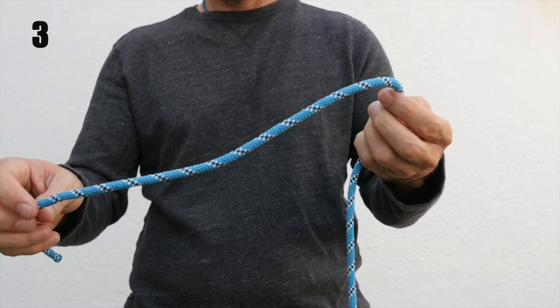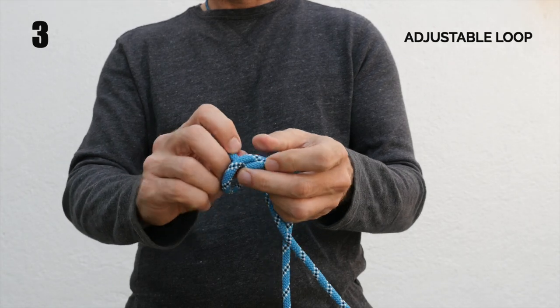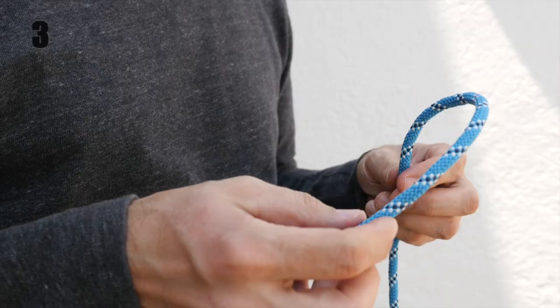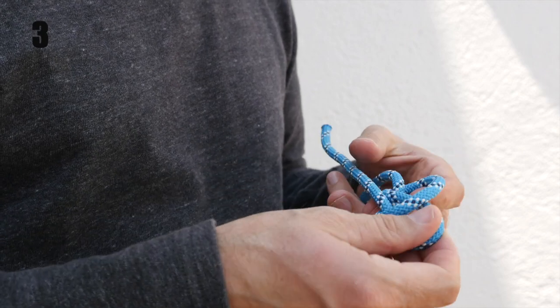The next type of knot is an adjustable loop. I'm going to show you two ways to make an adjustable loop with the overhand knot. The first way is by passing a little bite through the overhand knot instead of the complete working end.